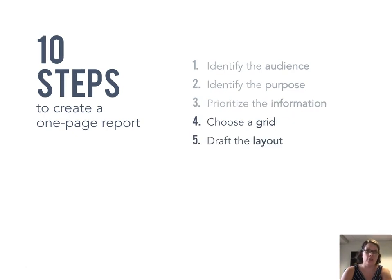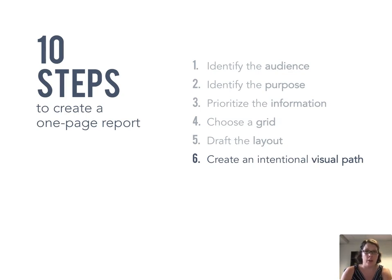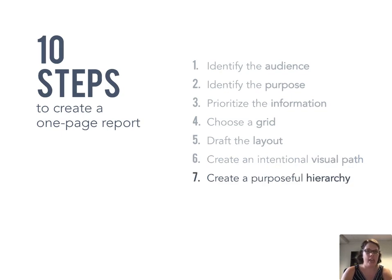Steps four and five get into visual strategies. We want to make sure alignment is good and that we have a strong visual layout — information that's really helpful in making that one-page report look nice. Also covered in video three: creating an intentional visual path. Is your reviewer going right to the bottom corner and getting stuck there, never reading the rest of the page? A purposeful hierarchy is important — you don't want your reader missing sections because hierarchy isn't used correctly. The use of white space is another crucial element. Steps four through eight are covered in video three on visual strategies and are essential for your reviewers to give feedback on.